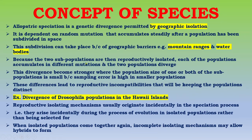This subdivision can take place because of geographic barriers such as mountain ranges and water bodies. Because the two subpopulations are then reproductively isolated, each accumulates different mutations and the two populations diverge. This divergence becomes stronger where the population size of one or both subpopulations is small, because sampling error is high in smaller populations. These differences lead to reproductive incompatibilities that keep the populations distinct. An example is the divergence of Drosophila populations in island archipelagos such as Hawaii — Drosophila being a fruit fly.